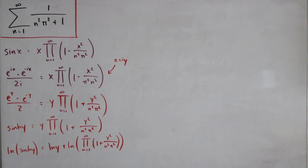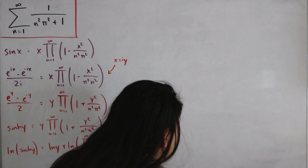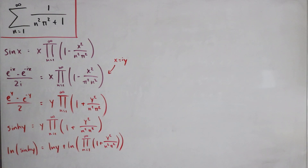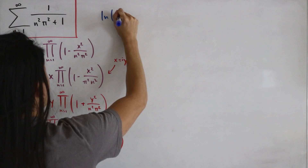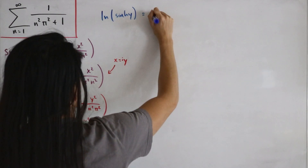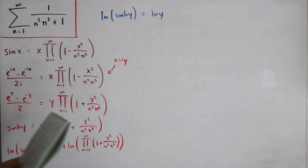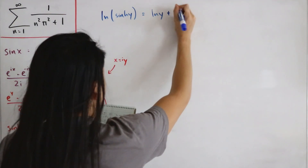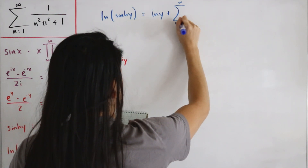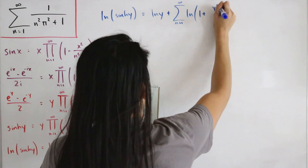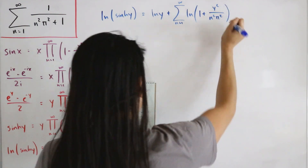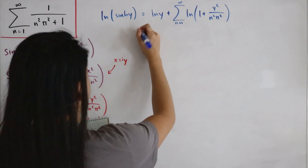We can't do much with the left-hand side yet, but on the right-hand side, by continuity the natural log of the infinite product becomes an infinite sum of natural logs. So: ln(sinh(y)) equals ln(y) plus the infinite sum from n equals 1 of ln(1 plus y squared divided by n squared pi squared).